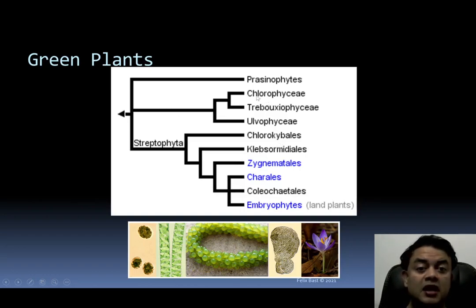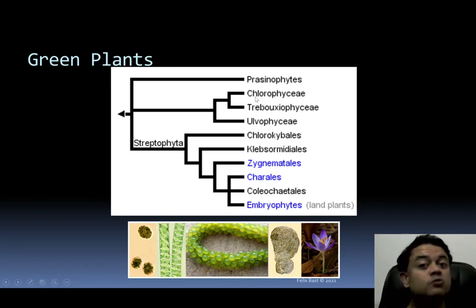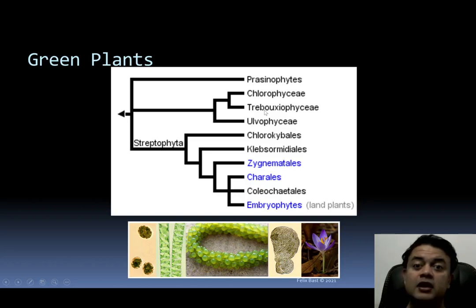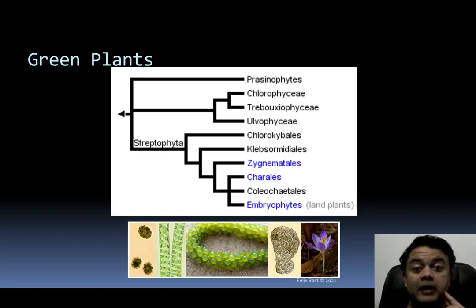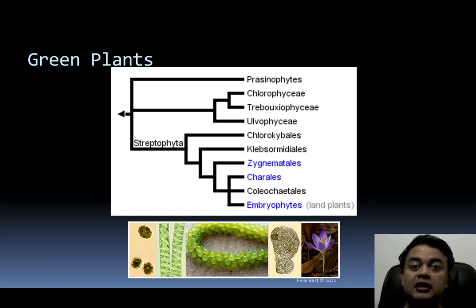The UTC clade — Ulvophyceae, Trebouxiophyceae, and Chlorophyceae — is very well studied, especially seaweeds. Trebouxiophyceae is common in terrestrial ecosystems; Trebouxia is a well-known alga often found as the phycobiont in lichens. Prasinophytes are another poorly studied group with few taxonomists working on them.